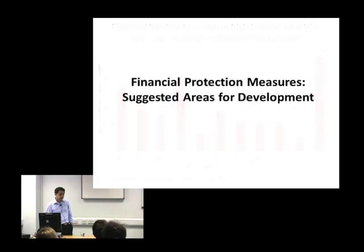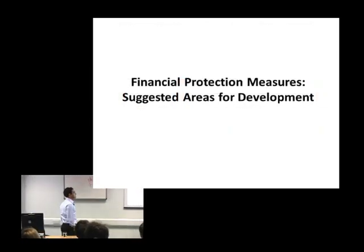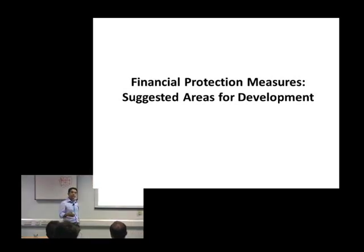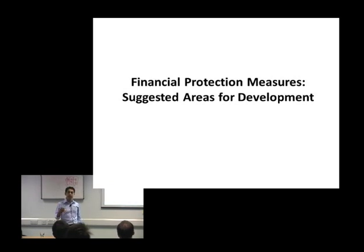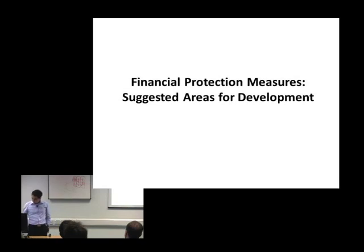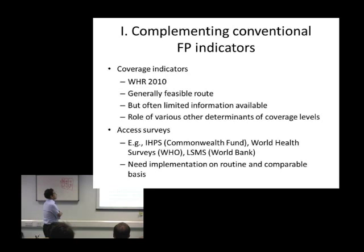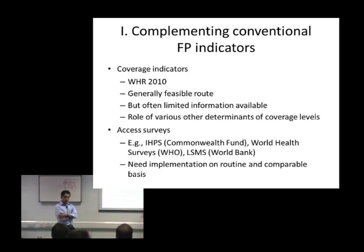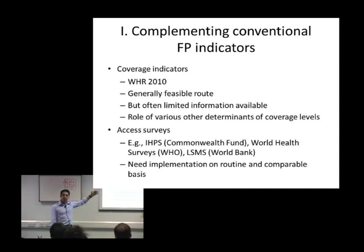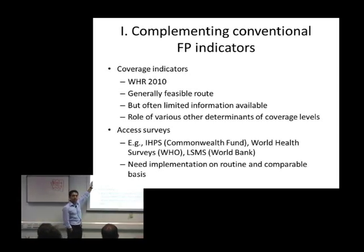My objective here is to briefly discuss a few practical alternatives to complement and improve on current financial protection analysis. The first alternative would be to complement conventional catastrophic spending and impoverishing spending indicators with measures of coverage for some interventions. This is the route recommended in the latest World Health Report, and it has the practical advantage that coverage indicators are available for most countries, allowing comparisons over time for a high number of countries.